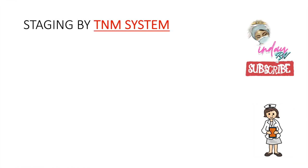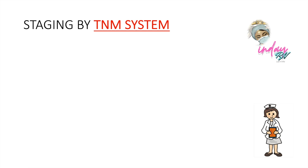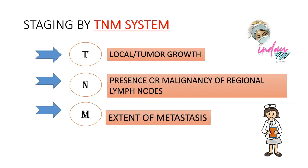Most clinicians use the TNM system, which is the most common system used by doctors. In the TNM system: T stands for tumor growth, N for the presence or malignancy of regional lymph nodes — also called nodal, and M stands for the extent of metastasis. So: T for tumor, N for nodal, M for metastasis.